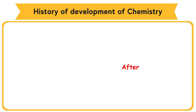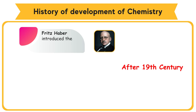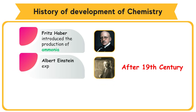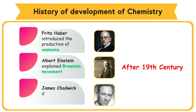After the 19th century: Fritz Haber introduced the production of ammonia; Albert Einstein explained Brownian movement; and James Chadwick discovered neutrons.